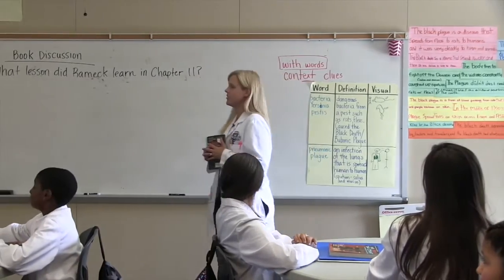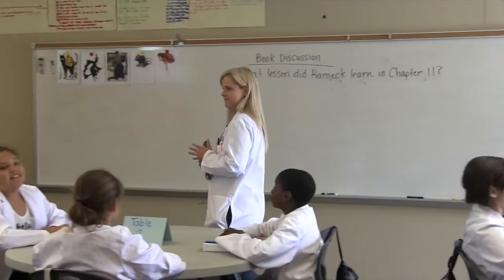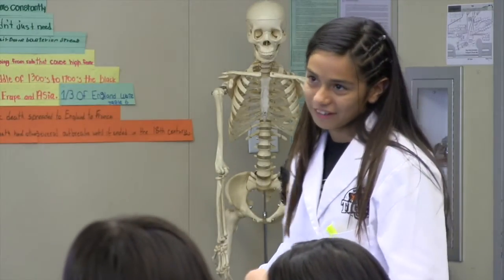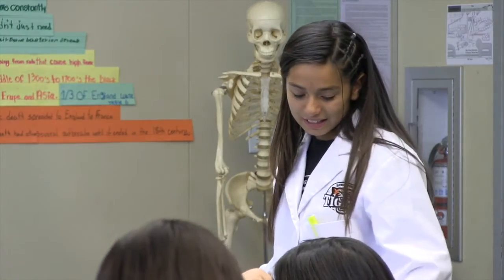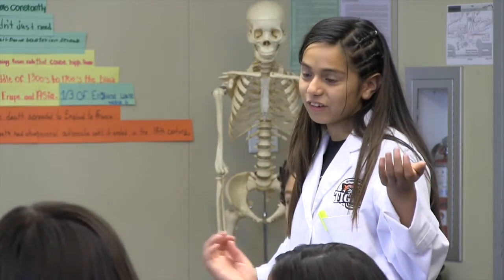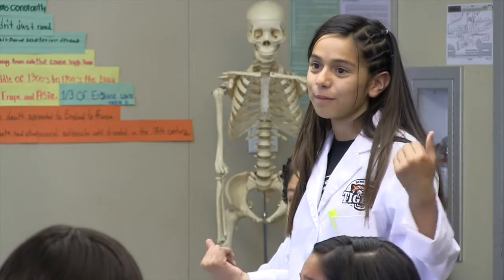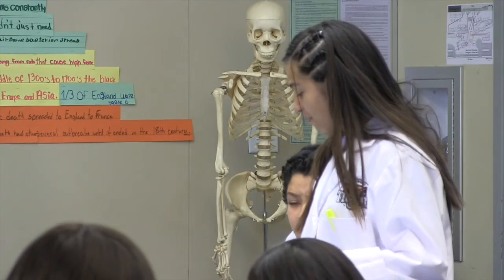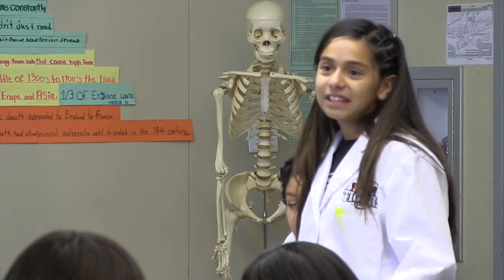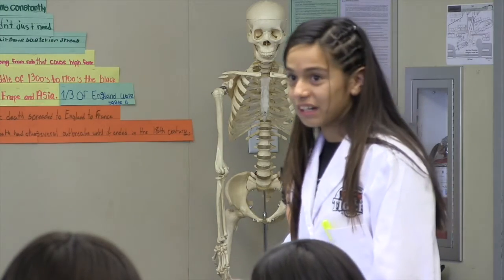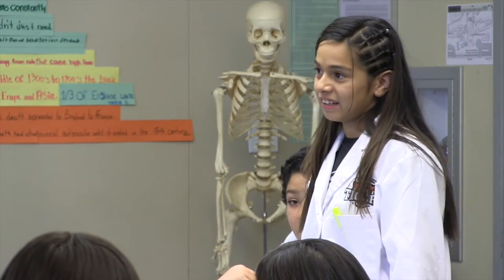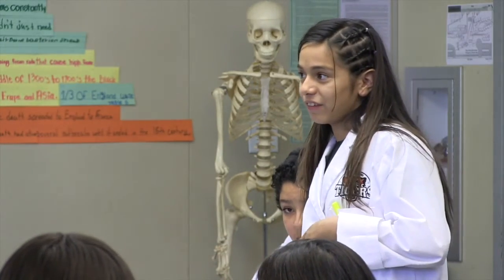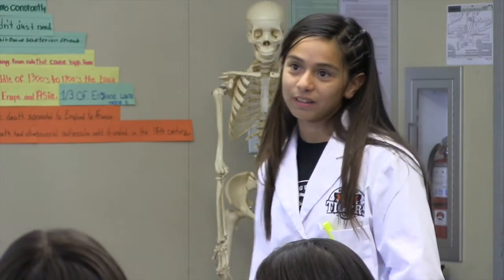A student discussing the lesson from Chapter 11 explained that the character didn't want to go because he feared his friends would make fun of him and he'd no longer be part of their friend group. But the student concluded: 'I would take this opportunity because it's a once-in-a-lifetime opportunity, and he should know that even though people will make fun of you, being smart is better than being cool.'